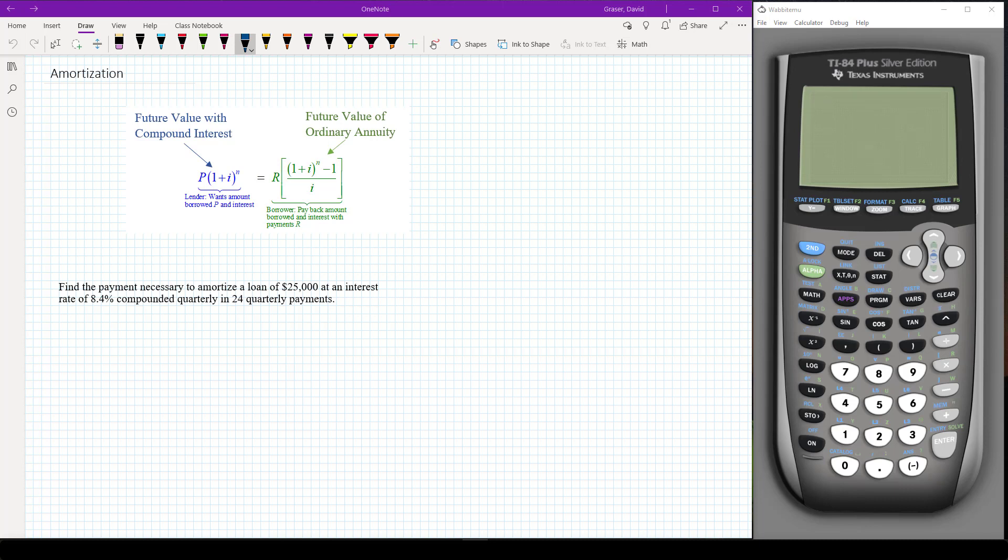So let's go ahead and put in the different numbers here. So in our case the lump sum that we're getting here is the $25,000 so we're going to say $25,000 times (1 + the interest rate per period).